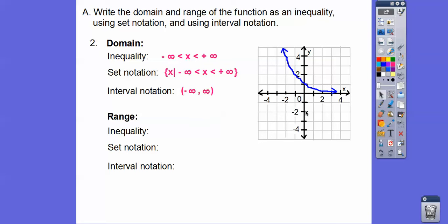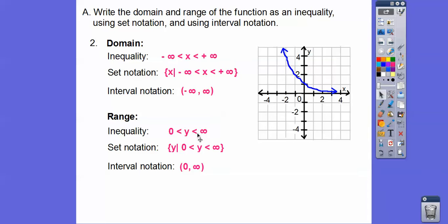Range is up and down movement. The exponential graph goes up forever, but it doesn't go down forever — it approaches y equals 0 but never crosses it. So the range is everything greater than 0: y is greater than 0. Set notation is written accordingly, and interval notation is written as (0, infinity) with a parenthesis at 0 since it's not included. That interval notation is the same as y is greater than 0.